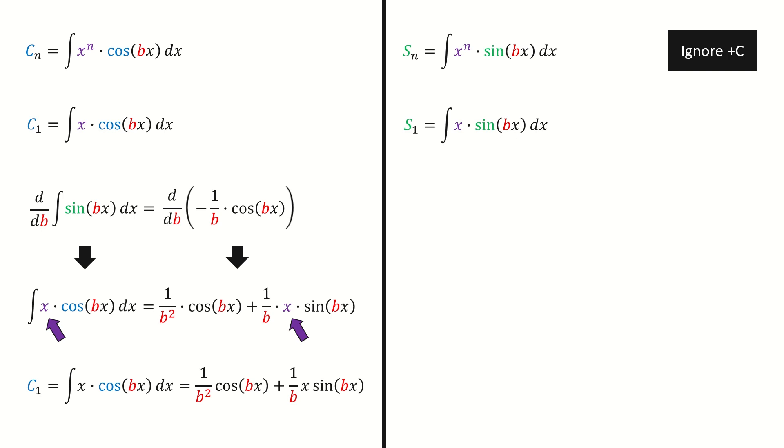Now let's look at s1. Here we use the result for this basic integral. Then we take the derivative on both sides. The left-hand side goes here. And the right-hand side goes here. Note for the purple-colored x, they are coming from chain rule.